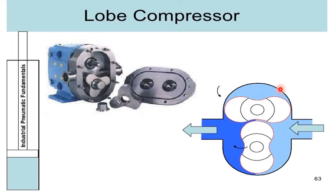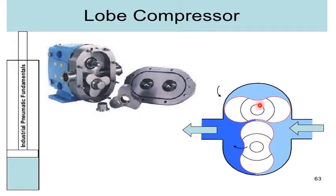Next is the lobe compressor. It consists of two rotors mounted inside the casing. The rotors are meshed with each other — one is the driver and the other is the driven. When the driver rotor is rotated by a prime mover, the driven rotor also rotates. Air gets trapped in the pockets between the rotor and casing and is carried by the rotors from the inlet to the outlet.